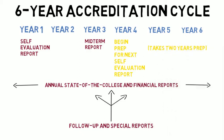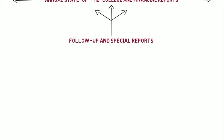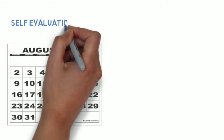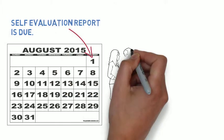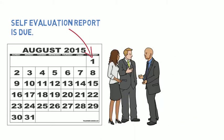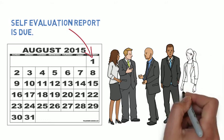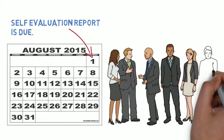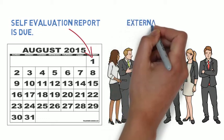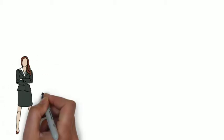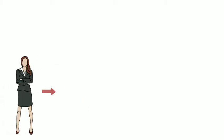The development of the self-evaluation report generally begins two years before the external visit. In the summer of 2015, Southwestern College will start a new cycle of accreditation. The college will submit a self-evaluation report in August 2015, followed by an on-site visitation by an external evaluation team whose membership consists of administrators, faculty, and staff from other ACCJC-accredited colleges. This visitation is scheduled for October 2015.